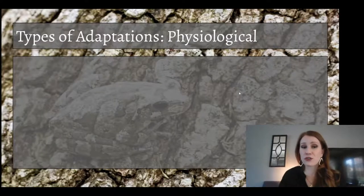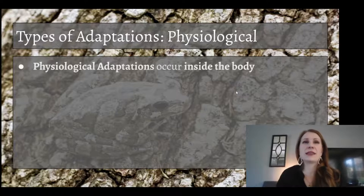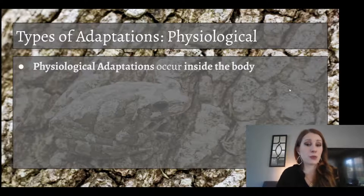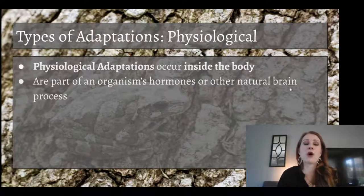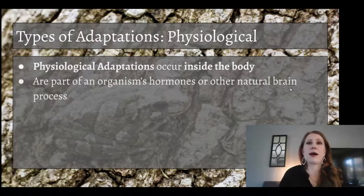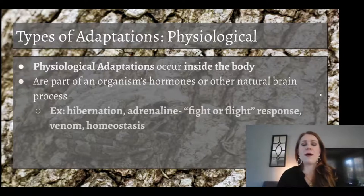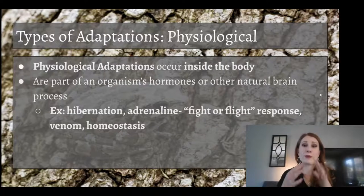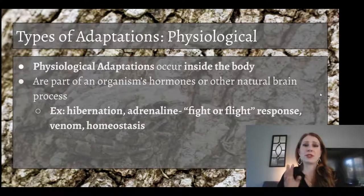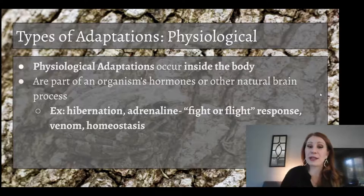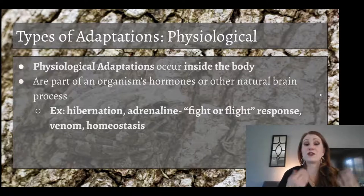We have also physiological adaptations, and these are happening inside the body. They're not as easy to view, but they're still as important. They can be part of an organism's hormones or brain processes — it's just an internal type of adaptation. Some examples include hibernation, where animals like bears gather lots of food and then kind of shut down their bodies for winter so they can survive in cold temperatures for long periods of time.